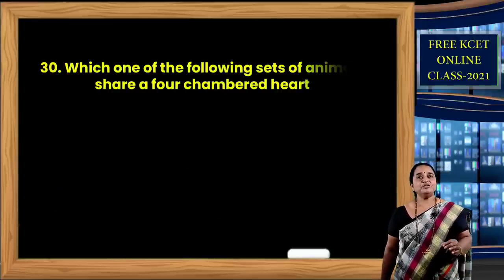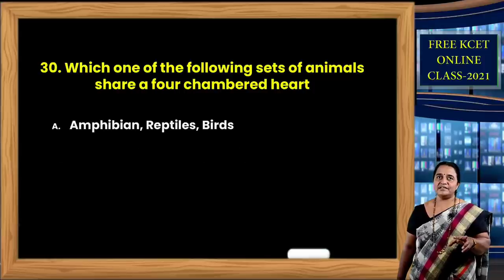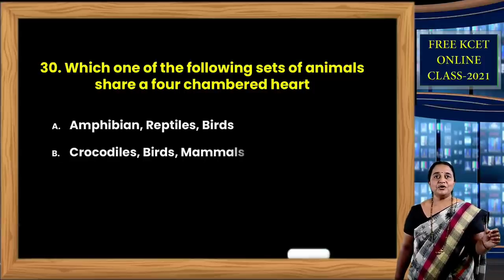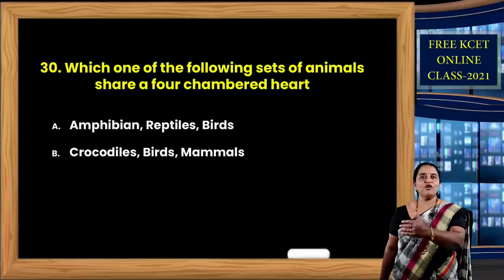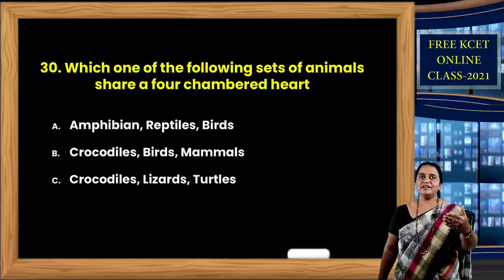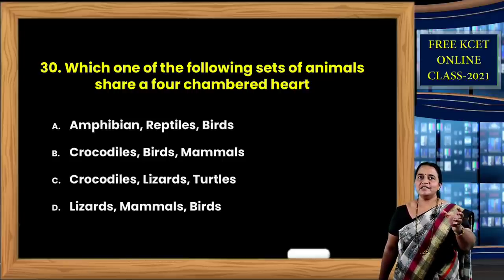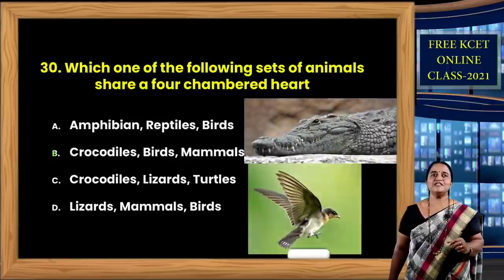Question 30: Which set of animals shares a four-chambered heart? Crocodile is the only reptile with a four-chambered heart. The remaining homeotherms — birds and mammals — also have four-chambered hearts. Looking at the options: crocodiles, lizards, turtles — only crocodiles have four-chambered heart; lizards and turtles have three-chambered. Lizards, mammals, birds — mammals and birds have four-chambered but not lizards. So the correct option is B: crocodiles, birds, and mammals.